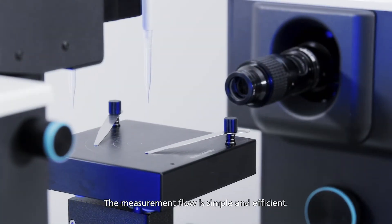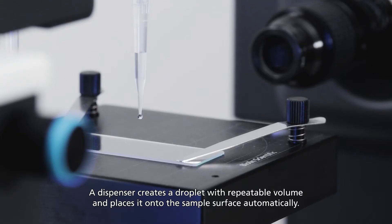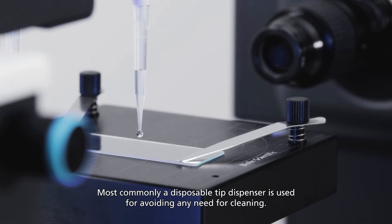The measurement flow is simple and efficient. A dispenser creates a droplet with repeatable volume and places it onto the sample surface automatically. Most commonly, a disposable tip dispenser is used for avoiding any need for cleaning.